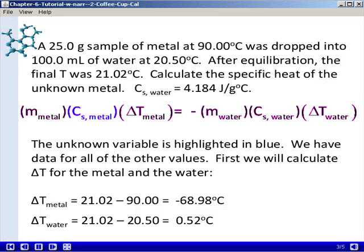And when we subtract the initial temperature for each, we get a negative 68.98 degrees Celsius for delta T for the metal, since it dropped its temperature, and a positive 0.52 degrees Celsius for delta T for the water.